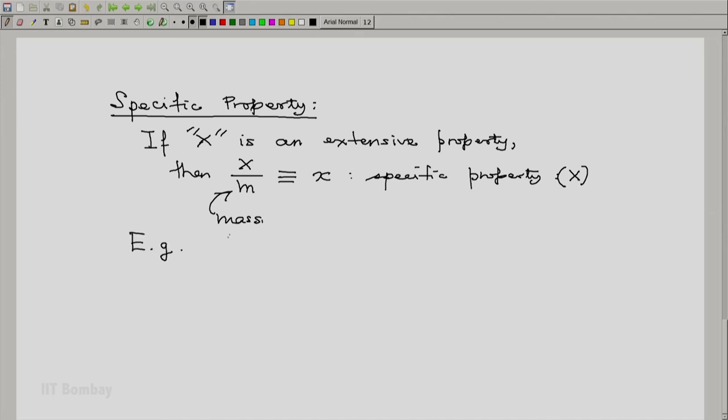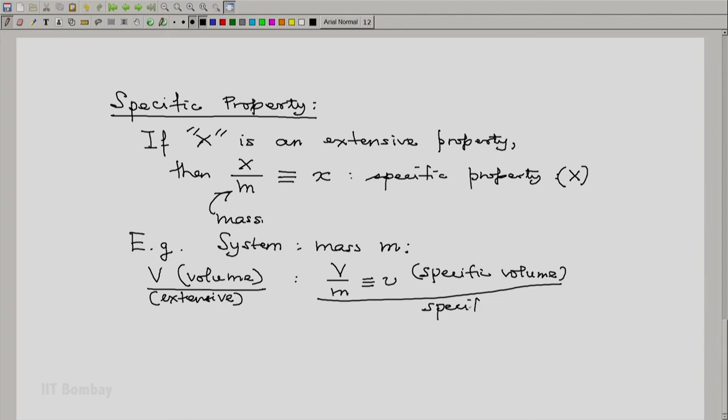For example, a system has mass of M. Then V, volume, would be an extensive property. But V by M, which is specific volume, this will be a specific property.